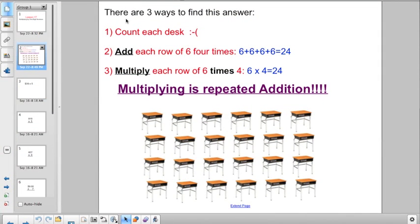Remember this page from lesson 13? If they were asking you to find how many desks there were, I have four rows with six desks in each. I could have counted each desk, but that's not going to be fun. I could add each row of six four times. Six plus six plus six plus six. I added it four times. Or, I could multiply it. Six times four.